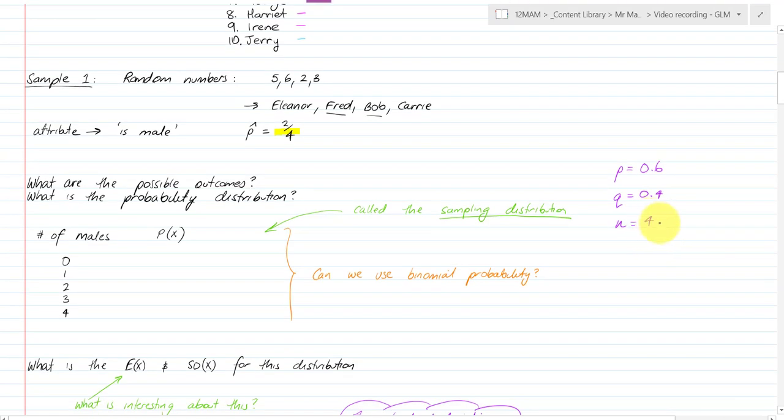So our probabilities here would be 4C0 times by 0.6 to the power of 0 times by 0.4 to the power of 4. And that's equal to something which I'll calculate in a moment. And then I've got 4C1 times by 0.6 to the power of 1 times by 0.4 to the power of 3. And I'm going to populate this list now for you and so you'll be able to see what comes up.